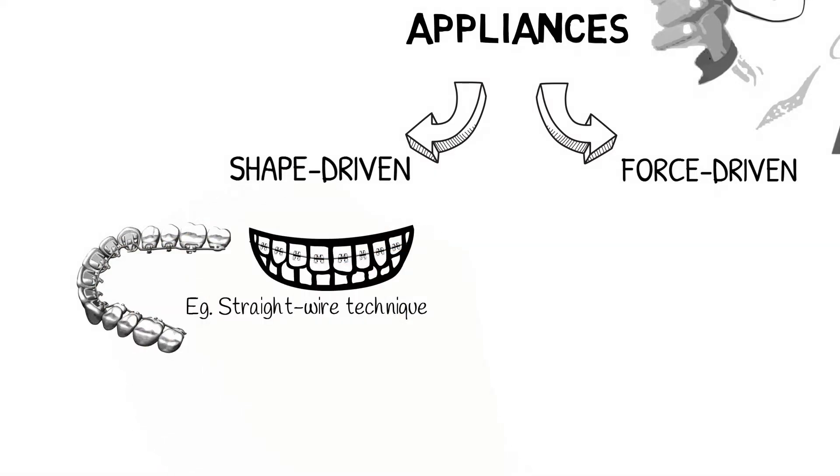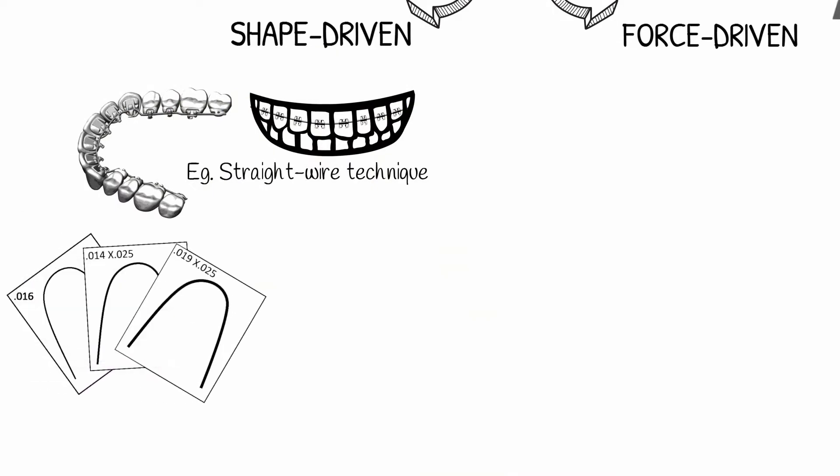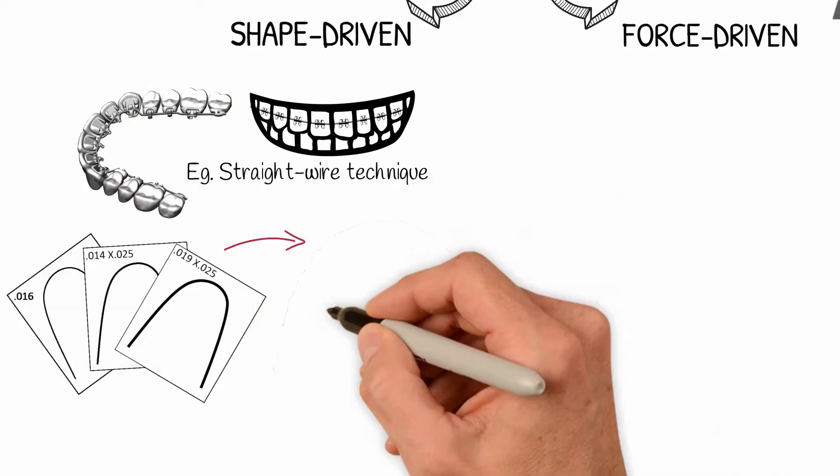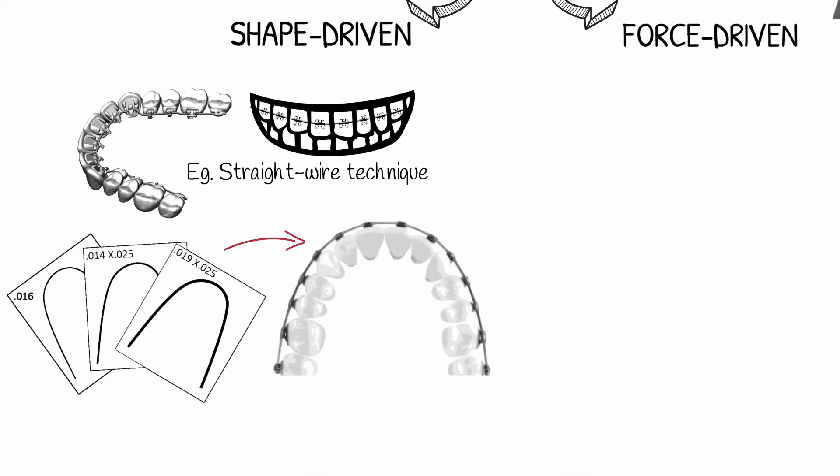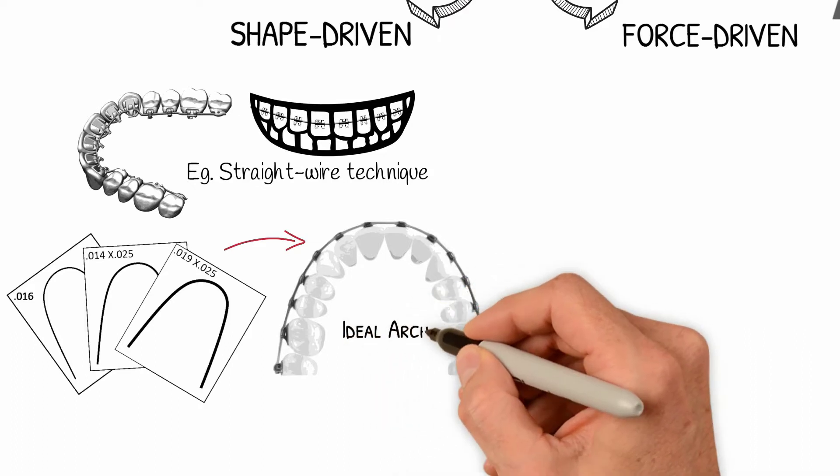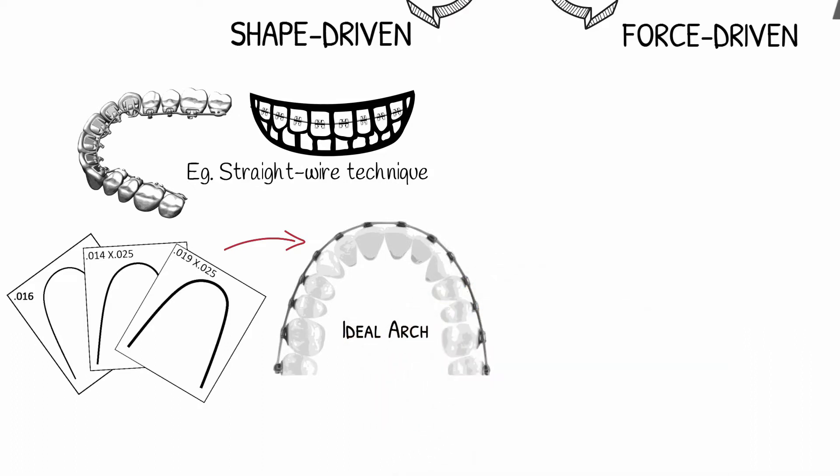In which a series of wires is used with the target of achieving a final arch wire whose shape would be ideal for the correction of the problem. Currently, many techniques seek to reach this final ideal form in a fast way and with as few bends as possible.